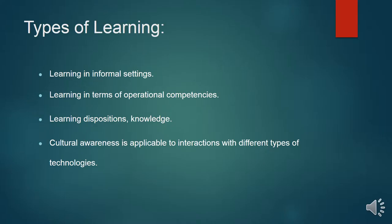Informal learning, as Lave (1991) states, is learning as an outcome of participation in socially situated practices. Operationally, as quoted by Plowman, McKay, and Stephen (2008), children will learn to switch items on and off, rewind, fast-forward, and navigate websites. Children also use technology to support the development of early literacy and numeracy. Learning dispositions, as quoted by Plowman (2008), were enhanced through opportunities for developing independence, sustaining attention, and building confidence. Lastly, cultural awareness relates to children's understanding of the roles technology plays in family life and the wider world, and their ability to harness that understanding for a range of social and cultural purposes.